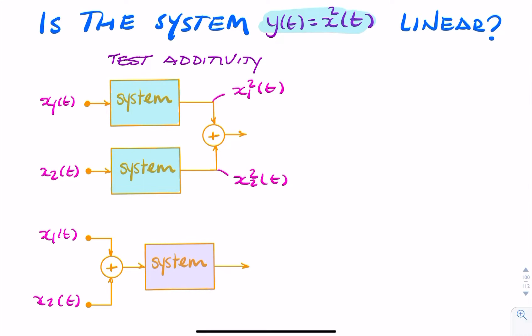And then I add these two together, and I get x1 squared plus x2 squared.